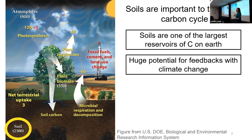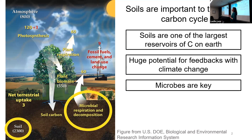Is this cycle going to make our climate change situation worse, or maybe it'll mitigate it? That's an open question. And the key to understanding the cycle and understanding these fluxes and how they might change in the future is the microbes. Microbes are key — they decompose the organic matter that ends up in the soil, and their metabolism mineralizes it into forms that make it back into the atmosphere.